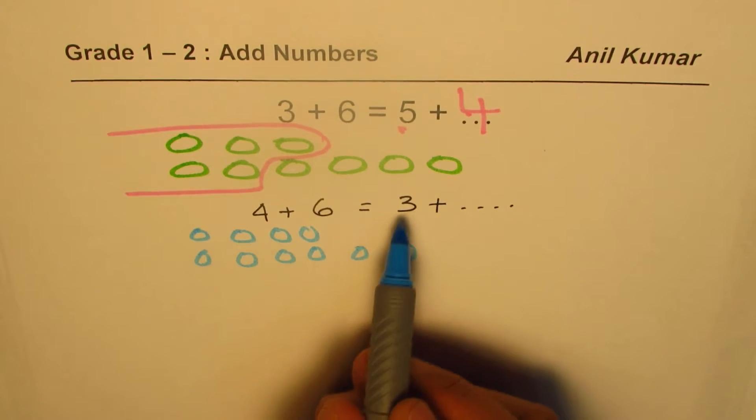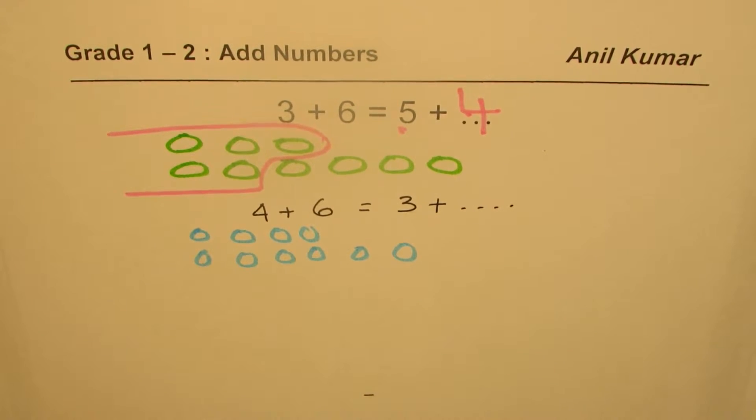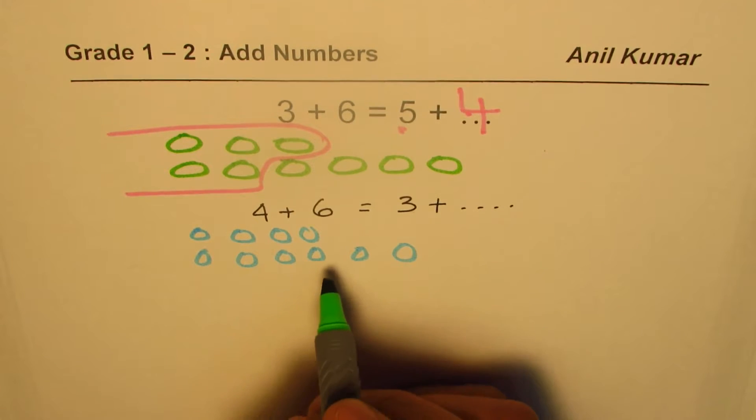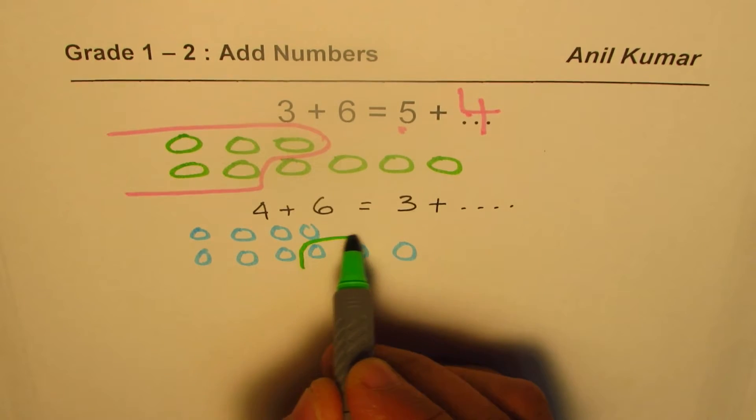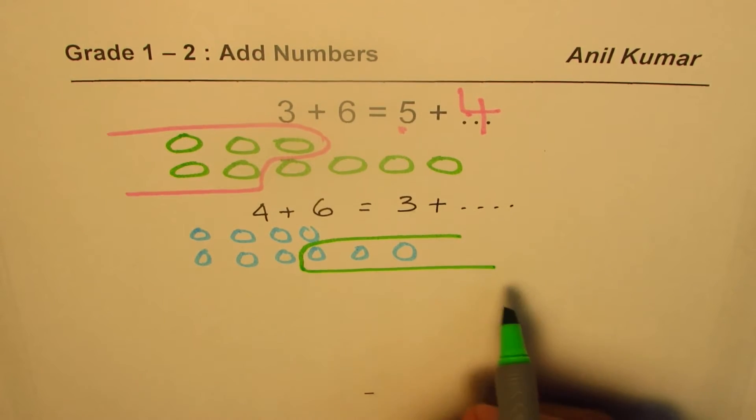4 + 6 is 10, but it is 3 + how many? That is what we need to find. So what we can do is we can take away three. Let's take away these three this time. We could take any from anywhere.